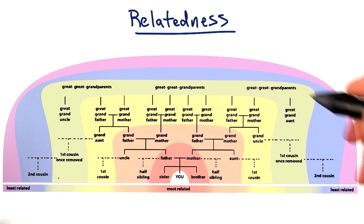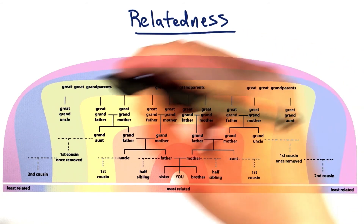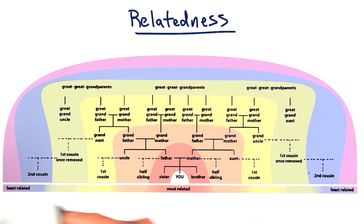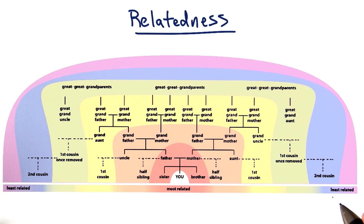Our family stretches on and on in many directions. We're including great-great-grandparents, second cousins, first cousins once removed. This visual really brings to light the shrubbiness of our families and our family trees.